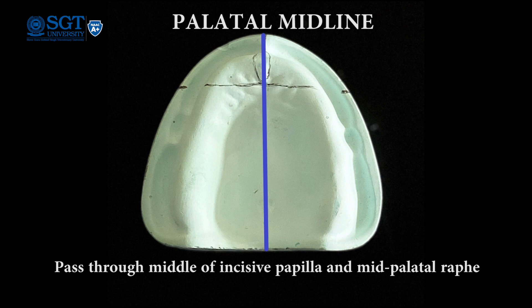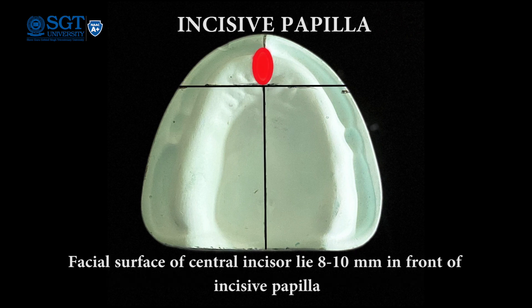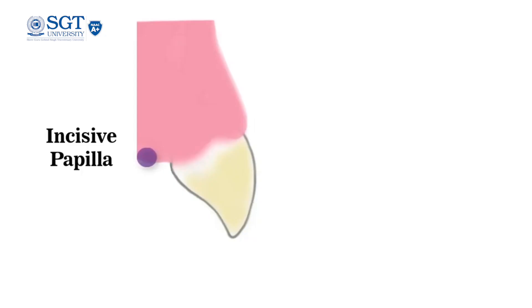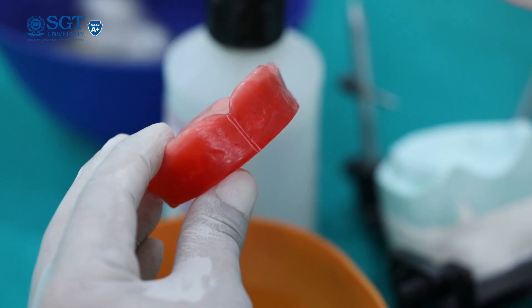If it is not symmetrical, then you have to adjust your occlusal rim. Then comes the canine reference — a line passing through the distal of the incisive papilla and perpendicular to the palatal midline. It should intersect the cusp tips of the canine. Another reference point is the incisive papilla. On an average, the facial surface of the central incisors should be 8-10 mm anterior to this line.